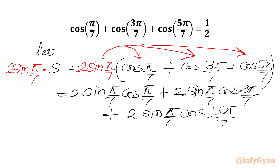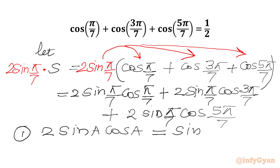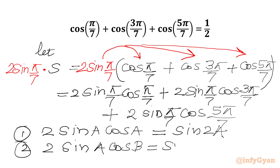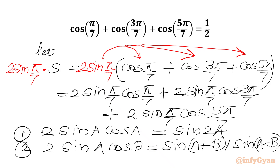Now we are going to use two powerful trigonometric identities. The first one is 2sinA·cosA = sin(2A), the double angle formula. The second identity is 2sinA·cosB = sin(A+B) + sin(A−B). We will apply the first formula to the first term, and the second formula to the second and third terms.